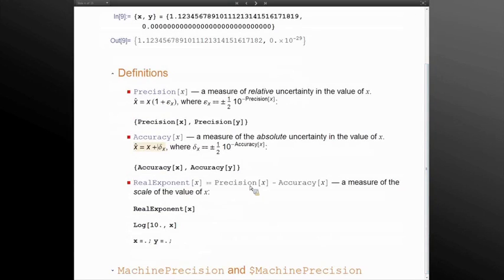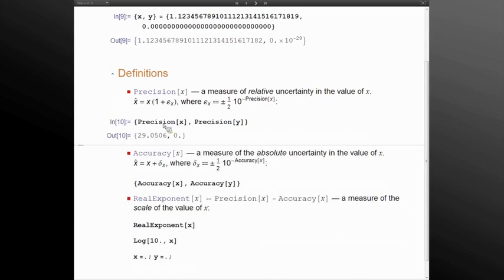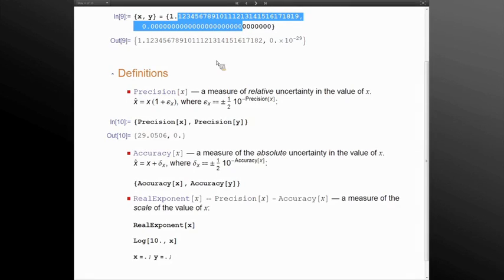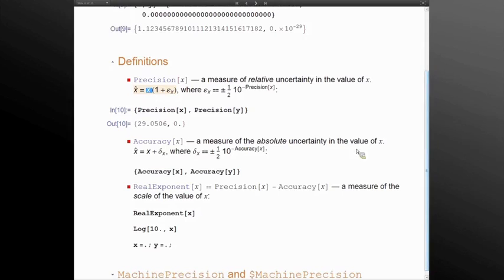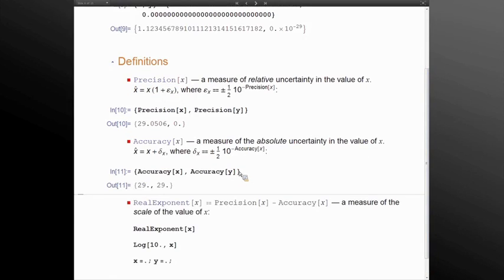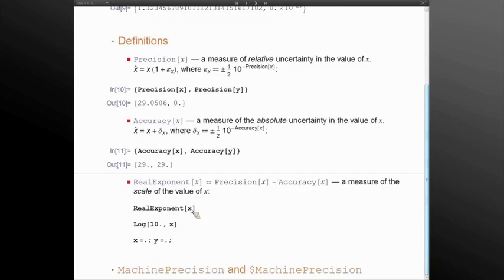For a given number, precision is a measure of relative uncertainty. Accuracy is a measure of absolute uncertainty. They are defined in such a way that their difference always measures the scale of the value. The precision of X is a little higher than 29, which is the number of digits here. Precision of Y is exactly zero because relative uncertainty is not defined.